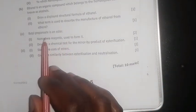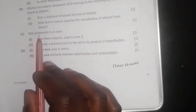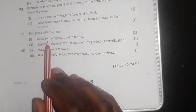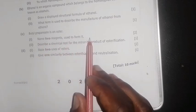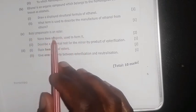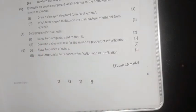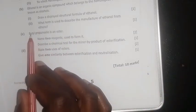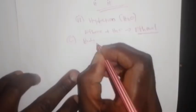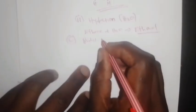Now part c says: butyl propanoate is an ester. Name the two reagents used to form it. When talking about esters, you have two reactants or reagents that are involved.